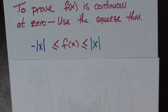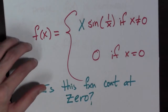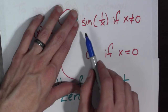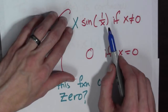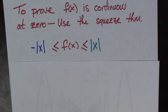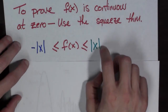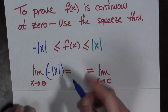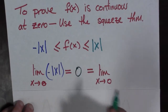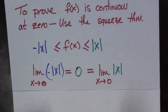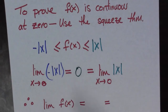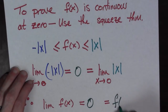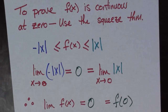Why is this true? Because sine of 1 over x is always between negative 1 and 1, inclusive. So when multiplying by x, f of x is bounded by minus the absolute value of x below and the absolute value of x above. Now, the limit as x goes to 0 of minus the absolute value of x is 0, and the limit of the absolute value of x is also 0. Therefore, by the squeeze theorem, the limit of f of x as x goes to 0 equals 0, which equals f of 0. So f of x is continuous at 0.